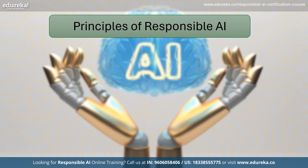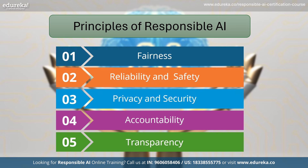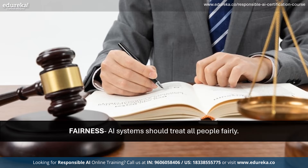There are a few common principles of responsible AI that every organization follows, such as fairness, reliability and safety, privacy and security, accountability and transparency. Fairness means AI systems should treat all people fairly. They shouldn't be biased by giving different answers for different groups, and should be accurate with the information they provide. If the AI is not fair, it will have trust issues with consumers.